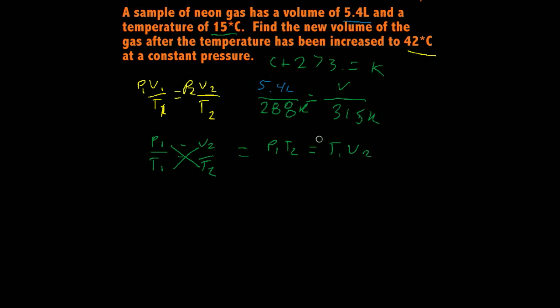So now we have our adjusted formula. All we do is solve for our unknown, which is V2. So I divide both sides by T1. These cancel out. And I'm left with P1 T2 over T1 equals V2.